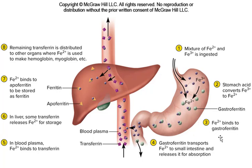Gastroferritin carries iron down into your small intestines where it's dropped off and picked up by transferrin, which carries it through the bloodstream and drops it off wherever red blood cells are being made. It's a cool process — we save a whole lot of the iron. Some of it comes out in our feces, giving it its color, and in our urine, giving urine its color. That's the breakdown of blood products.